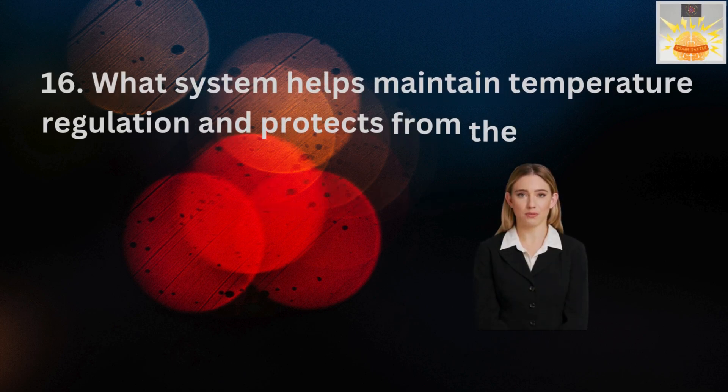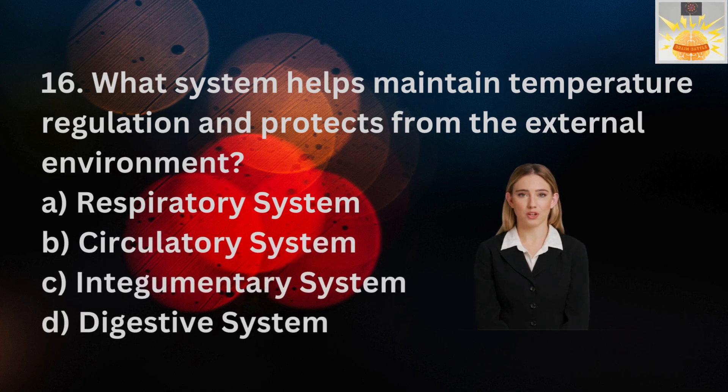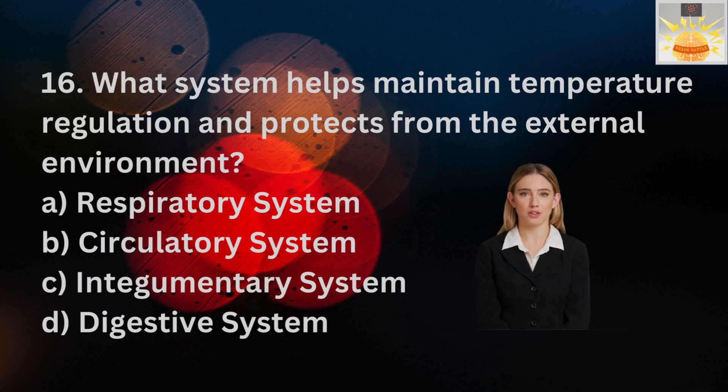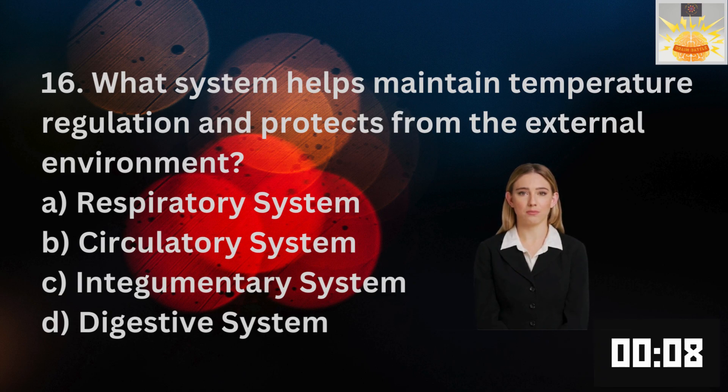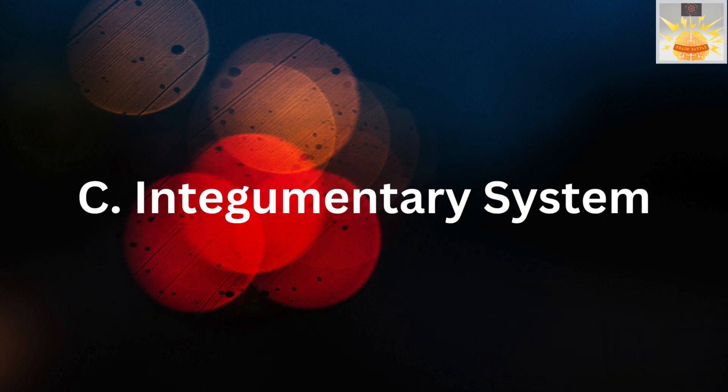Sure, Mike. Thank you. So question 16. What system helps maintain temperature regulation and protects from the external environment? A. Respiratory system. B. Circulatory system. C. Integumentary system. D. Digestive system. And the right answer is C. Integumentary system.